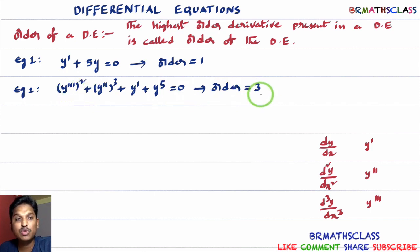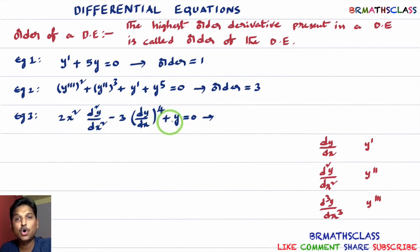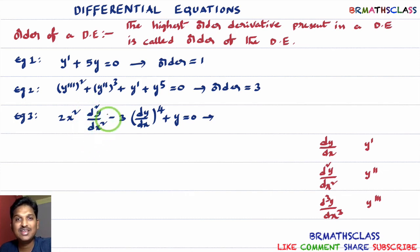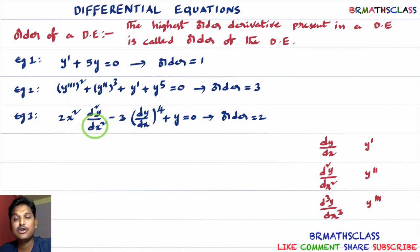Now observe this differential equation. First order derivative is present and second order derivative is present, but third order derivative is not present. So the highest order derivative is the second order derivative. Therefore, the order of this differential equation is 2 because the highest order derivative present in it is the second order derivative.